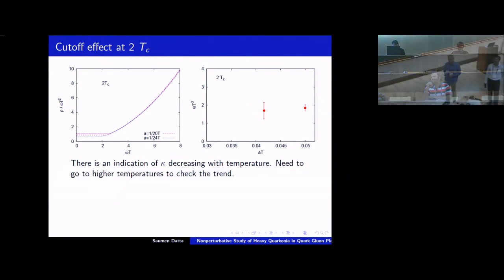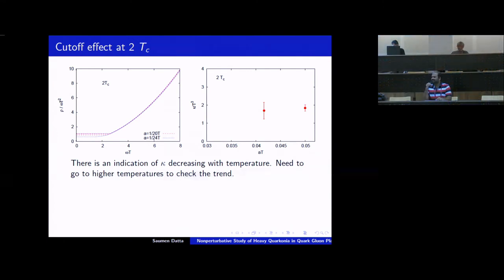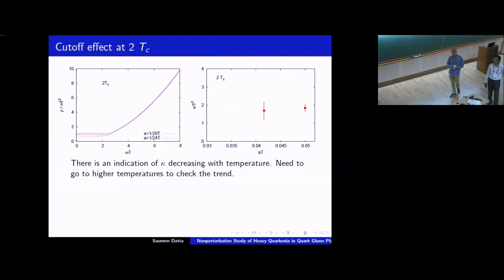Okay. And do you expect this kappa to change if you have like dynamical fermions? Because those were... Pretty, I mean, I'm pretty sure it would. So if you wish, you can take this as a study to understand the bottomonium correlator in a gluonic plasma. So the number should change, yeah. Any other questions? If not, let's thank the speaker once more for an interesting talk.